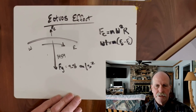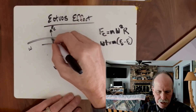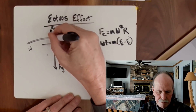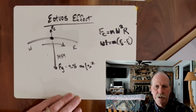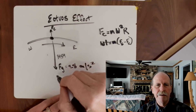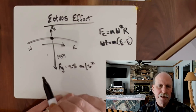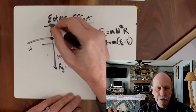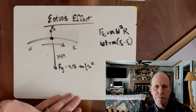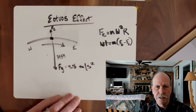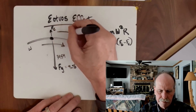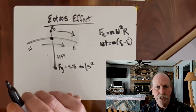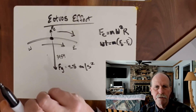The Eötvös Effect says that when you are an object stationary on the surface of the Earth, you have two forces acting on you that determine your weight. The first force is gravity pulling you downwards. The second is centrifugal force pulling you upwards because of the baseline rotational speed of the Earth, which goes from west to east. If you travel from west to east with rotation, the centrifugal force will increase.